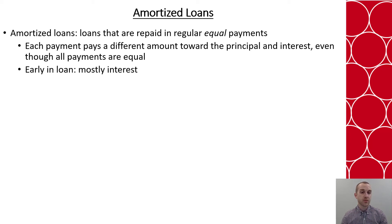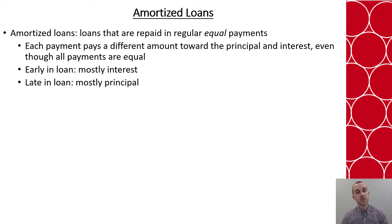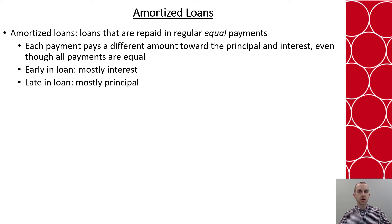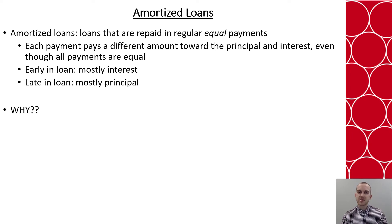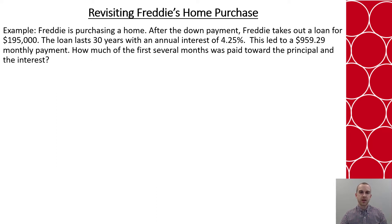Early on in a payment, you're going to be paying mostly towards the interest of the loan, whereas near the end, you're paying mostly towards the principal. Now, that sounds like maybe banks and loaning companies are taking us to town and taking our money, but that's not necessarily really the case. So let's look at why this would be what is happening.